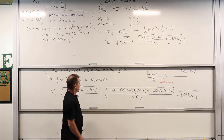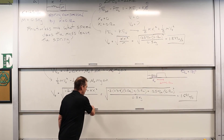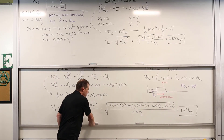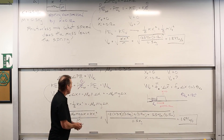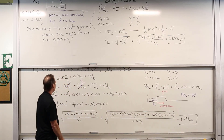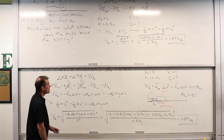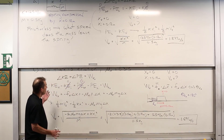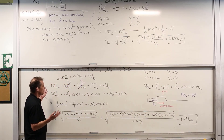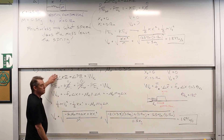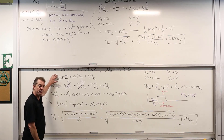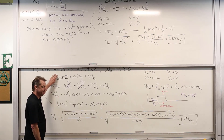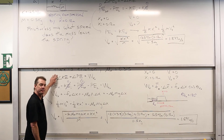Whenever we've got conservative and non-conservative forces acting simultaneously, we can use delta KE plus delta PE equals W_NC to figure things out. We'll come back with another problem. Thank you.